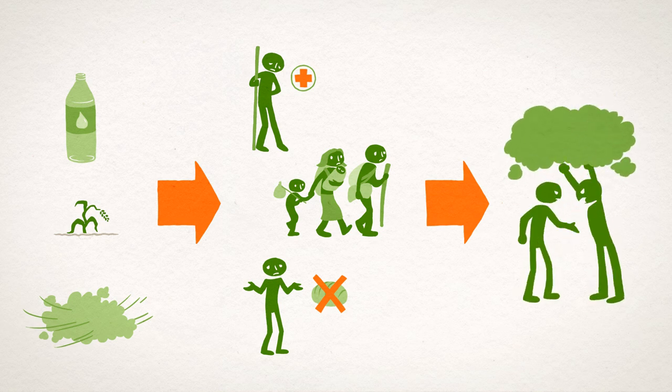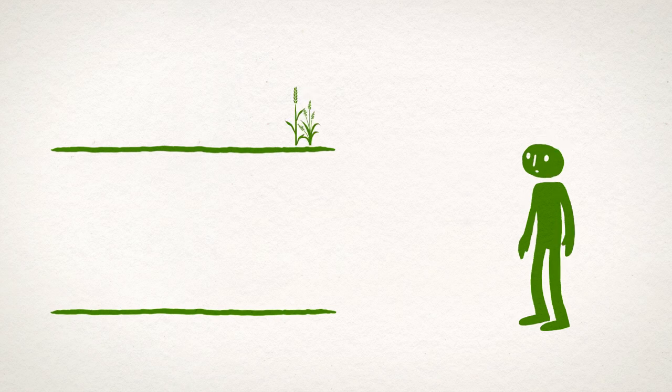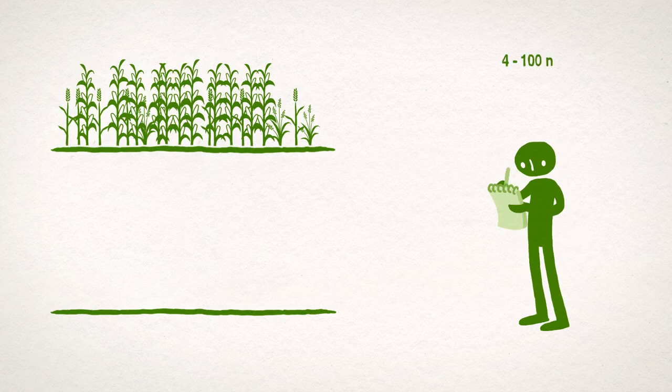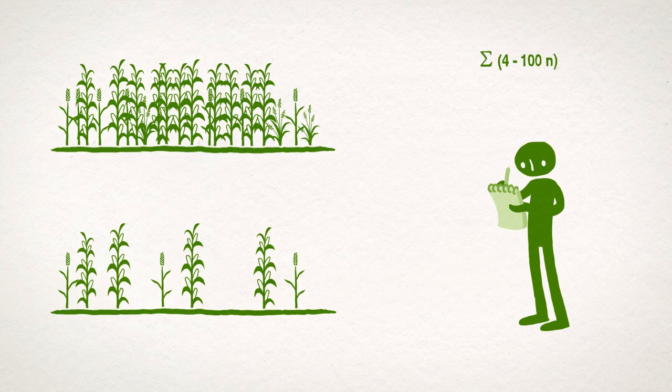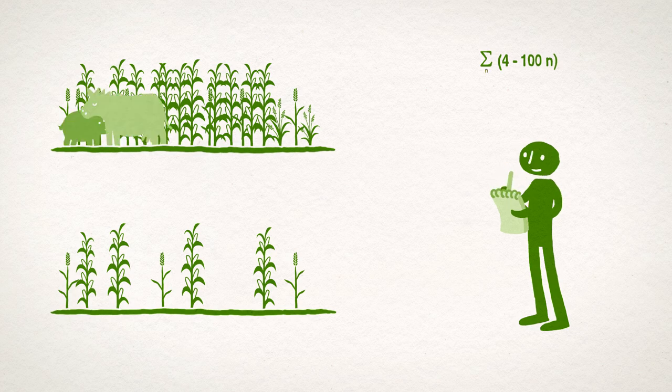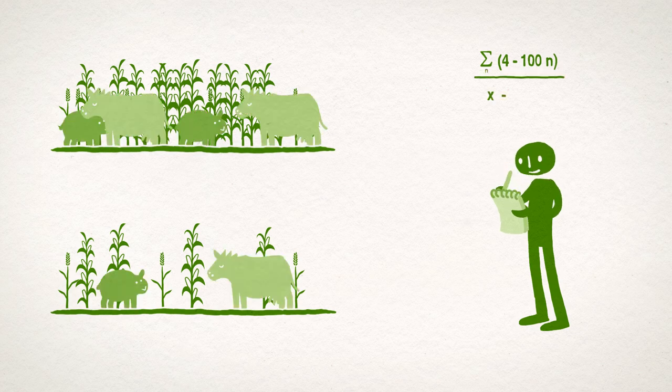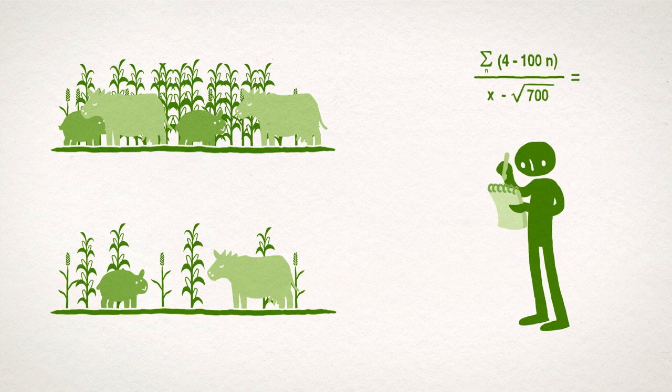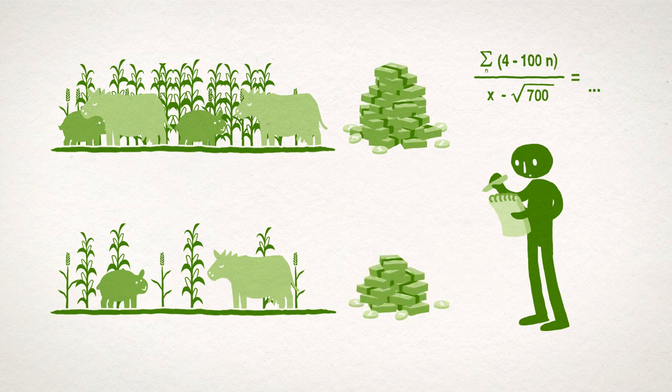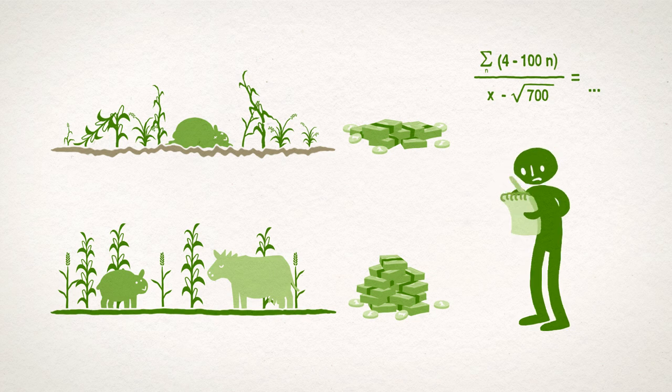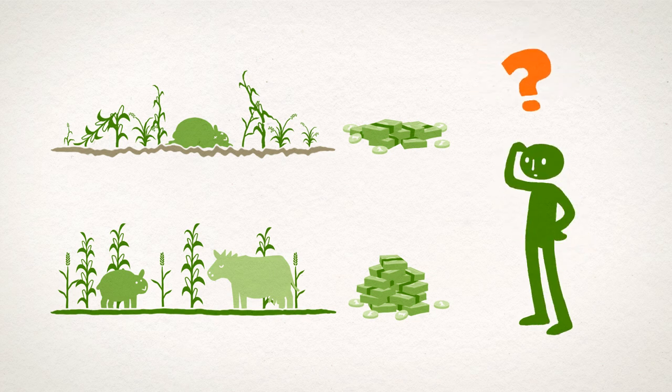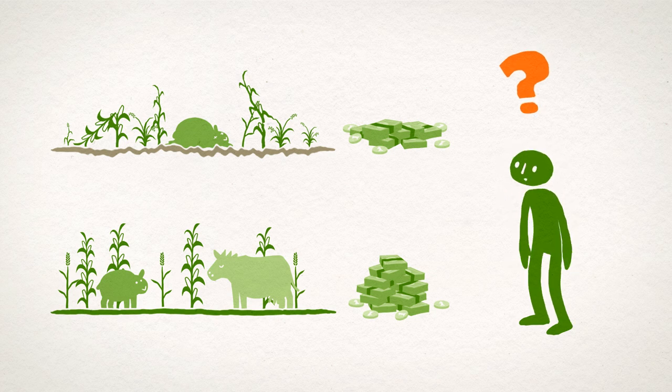But how can we prevent this? First of all, it is very difficult to take all these possible consequences into account in planning processes because it is so hard to recognize the true costs of our inaction. With the right figures, we could make the right decisions. We have to include the value of the soil services and the cost of land degradation into our calculation. Then it becomes obvious that using soils in the way that most of us do today is simply not economically viable in the long run.